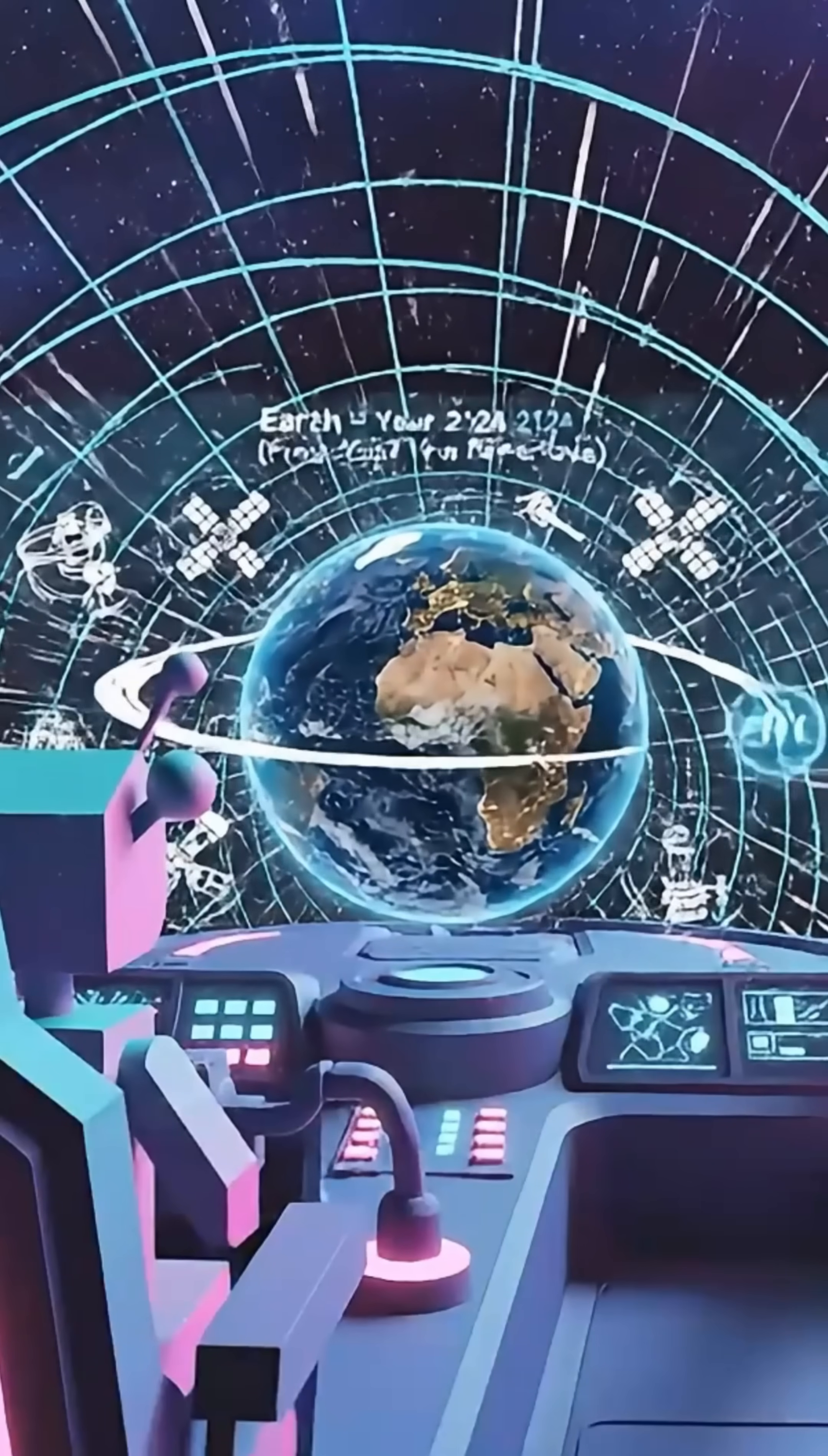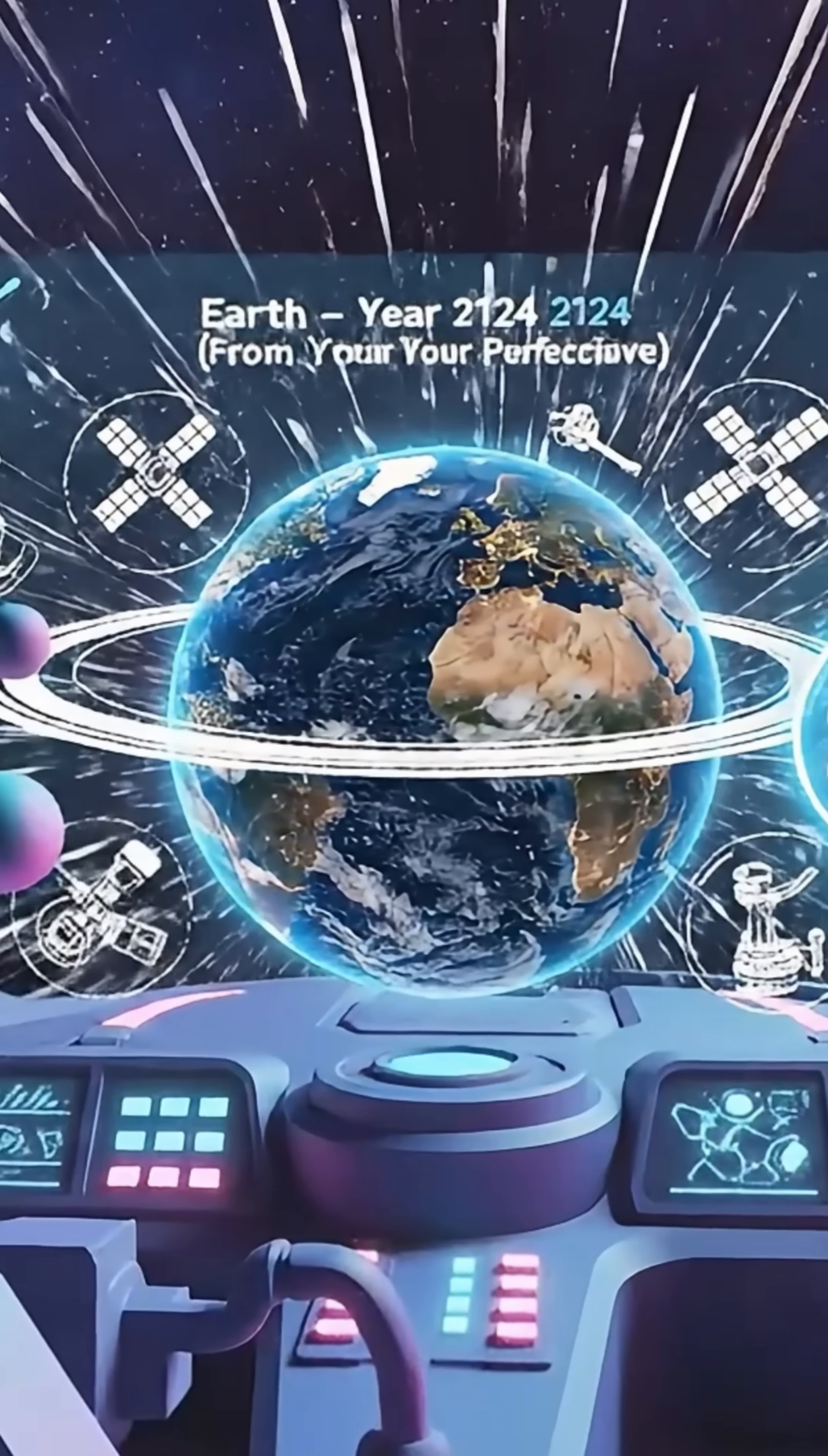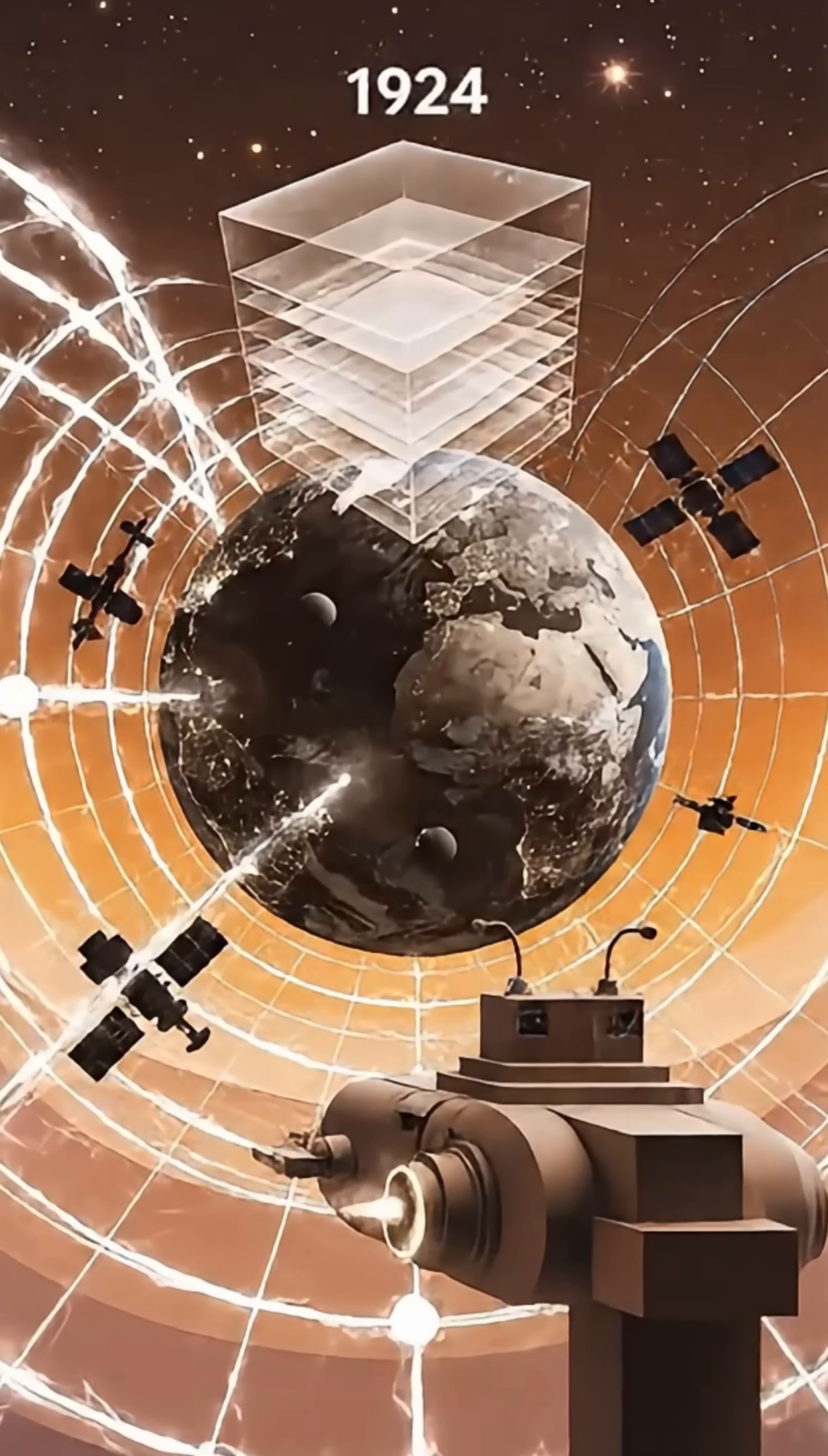The third alien flies toward Earth, also at 30 kilometers per second, but opposite direction. For this alien, Earth's now is 2124. They're watching your great-grandchildren building cities on Mars. So, which alien is right?